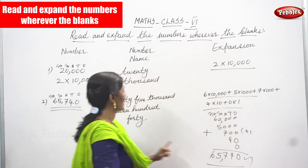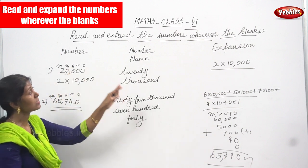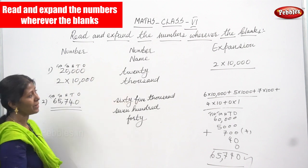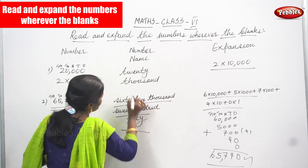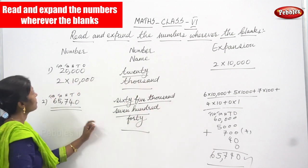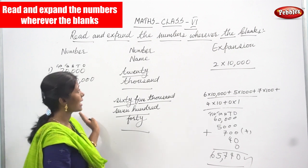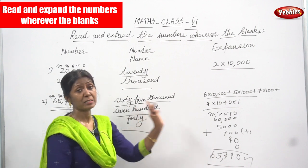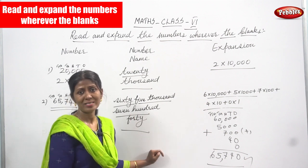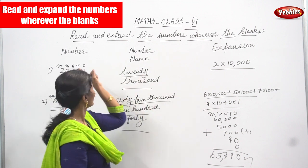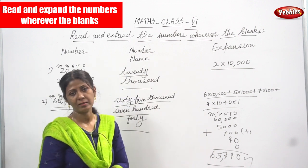So if you add everything you can get the same number. This is what 'read and expand the number wherever the blanks' means. In the question paper they give the number — sometimes they ask you to write the number name, sometimes they ask you to write the expansion form. You must know both. I hope you understand the concept of read and expand the number.